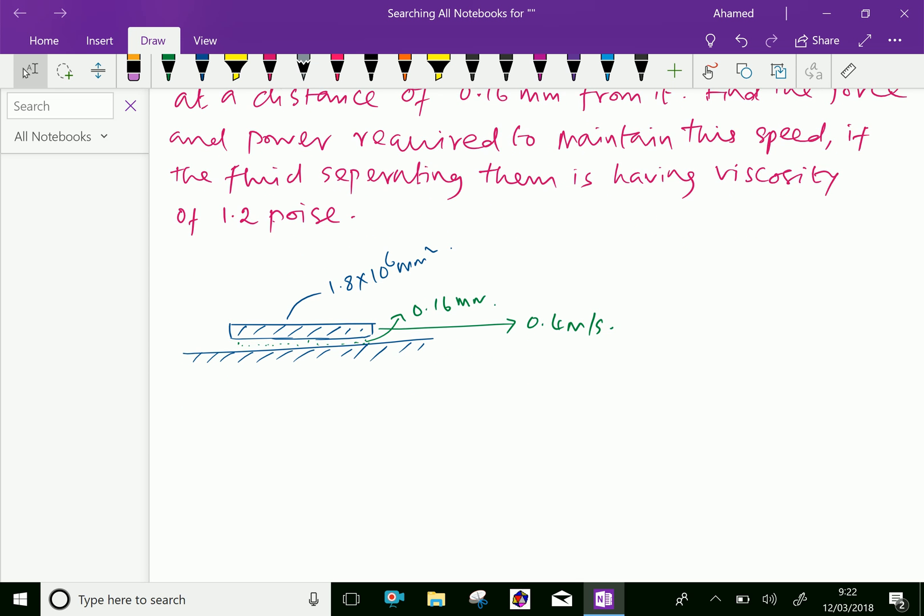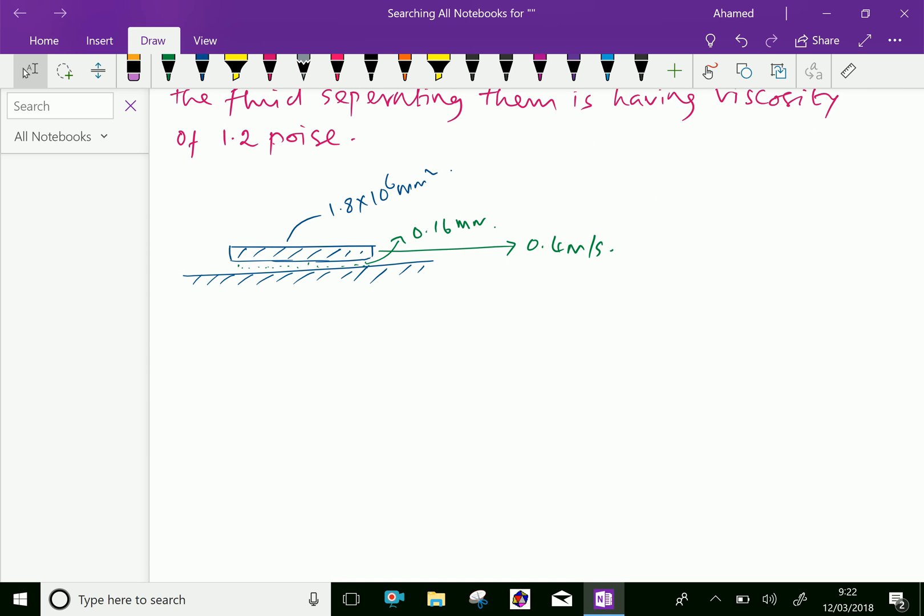Now, let us do this problem. Here, first area of the plate A equal 1.8 into 10 to the power of 6 mm square equal 1.8 into 10 to the power of 6 times 10 to the power of minus 6 meter square which is equal 1.8 meter square.